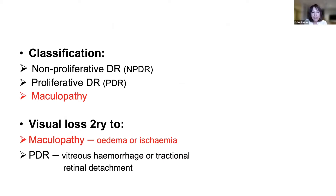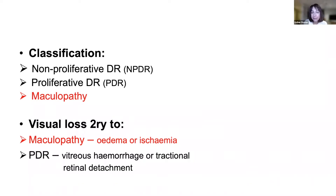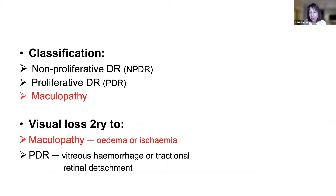Classification into non-proliferative, proliferative, and maculopathy is important — thinking of maculopathy as a separate part of the classification is very important. We classify the retina into non-proliferative and proliferative, and then have a separate classification for maculopathy. Visual loss secondary to maculopathy is very significant — diabetic maculopathy is the leading cause of visual loss in diabetes, and it is usually the edema and not the ischemia.